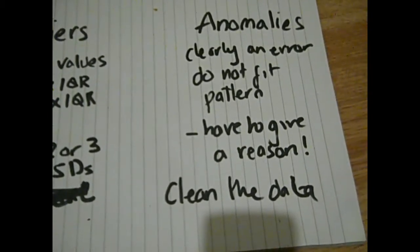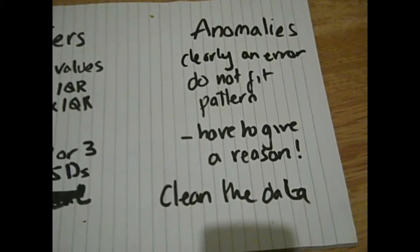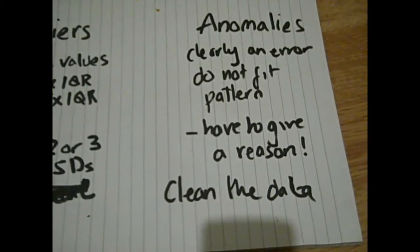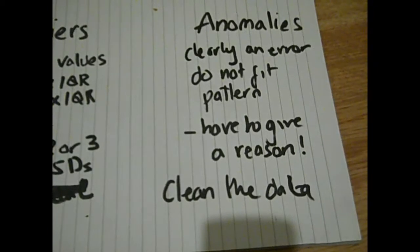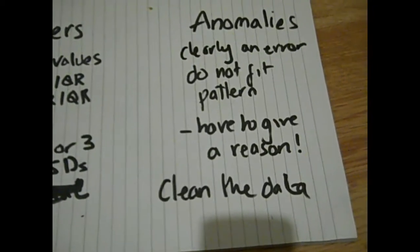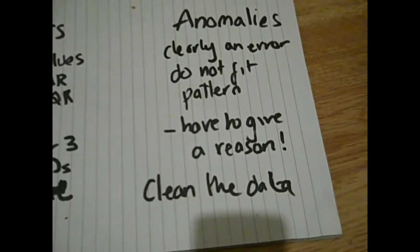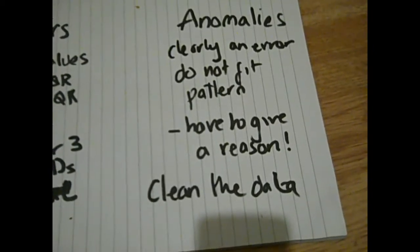If you are going to remove anomalies, and that's generally what you're meant to do - that's called cleaning the data - you have to give a reason. You have to say why is this an anomaly rather than just being an outlier. It's okay to be an outlier.